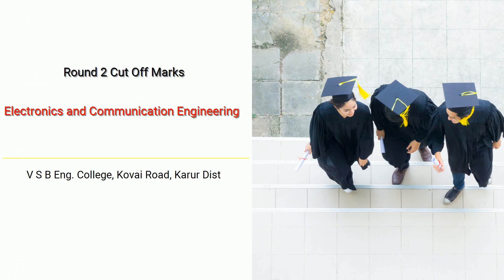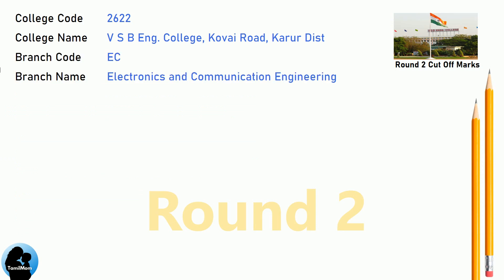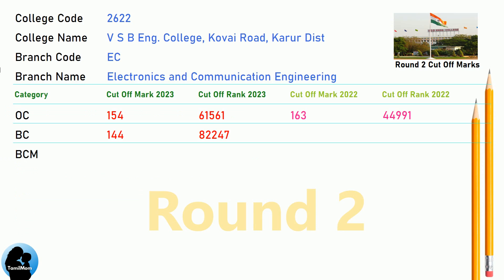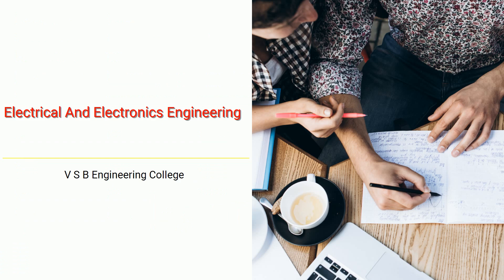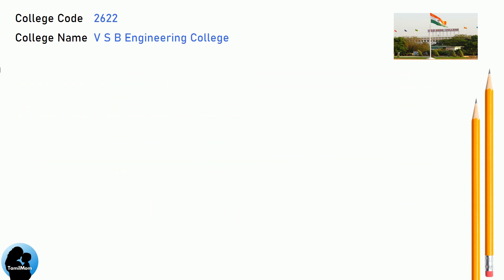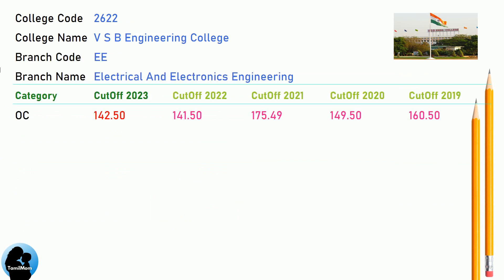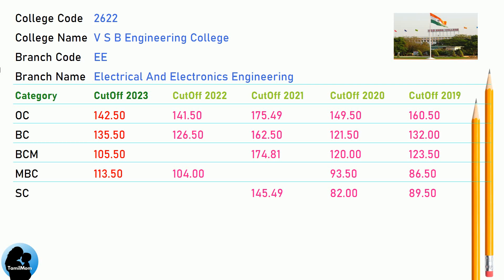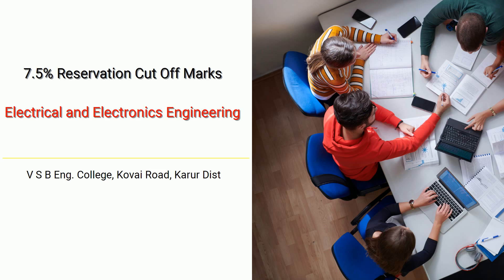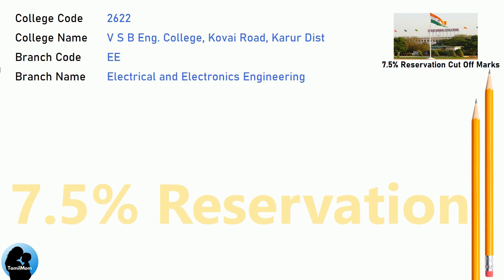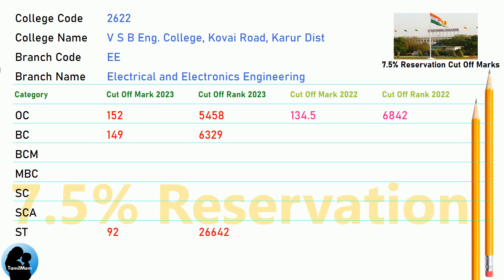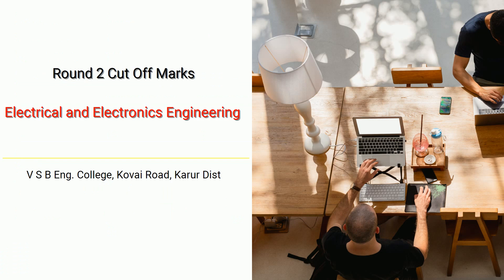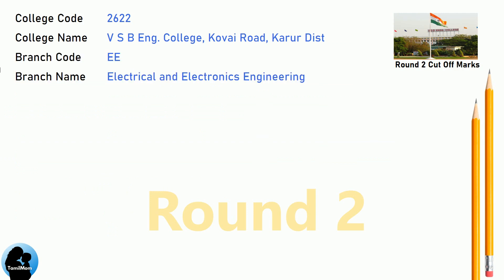DNA Round 2 Cut-Off for VSB Engineering College in Electrical and Electronics Engineering. DNA 7.5 Reservation Cut-Off for VSB Engineering College in Electrical and Electronics Engineering. DNA Round 2 Cut-Off for VSB Engineering College in Electrical and Electronics Engineering.